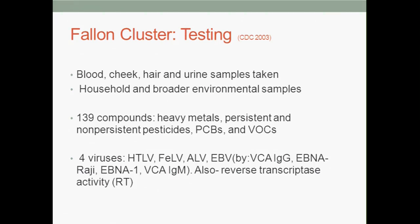What ensued was a case-control study of about 205 individuals from 55 families, where the CDC took blood, cheek, hair, and urine samples, as well as household and broader environmental samples from each of these households and around the town. They tested 139 compounds, including heavy metals, persistent and non-persistent pesticides including those used for arthropod control, PCBs and VOCs. They also tested for four viruses: human T-cell lymphotrophic virus, feline leukemia virus, avian leukemia virus, and Epstein-Barr by four different assays, and they looked for reverse transcriptase activity.